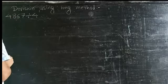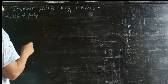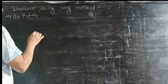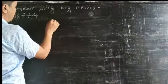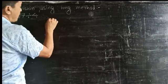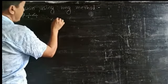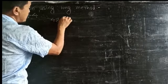4867 is the dividend and 4 is the divisor. So first you write the question: 4867 divided by 4.